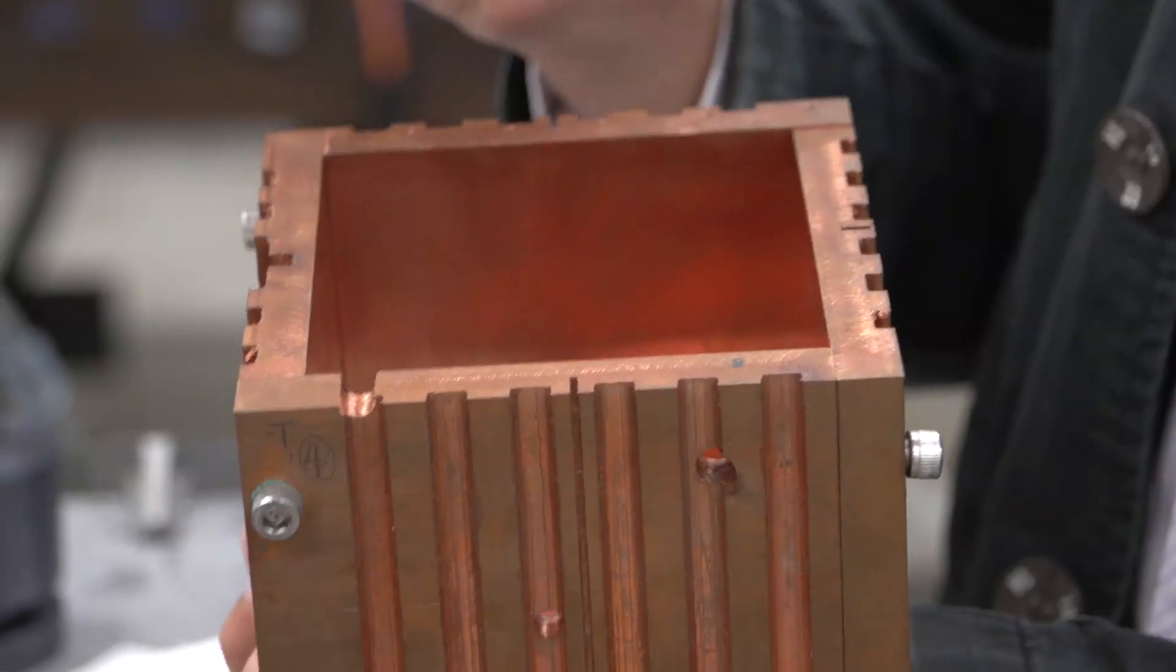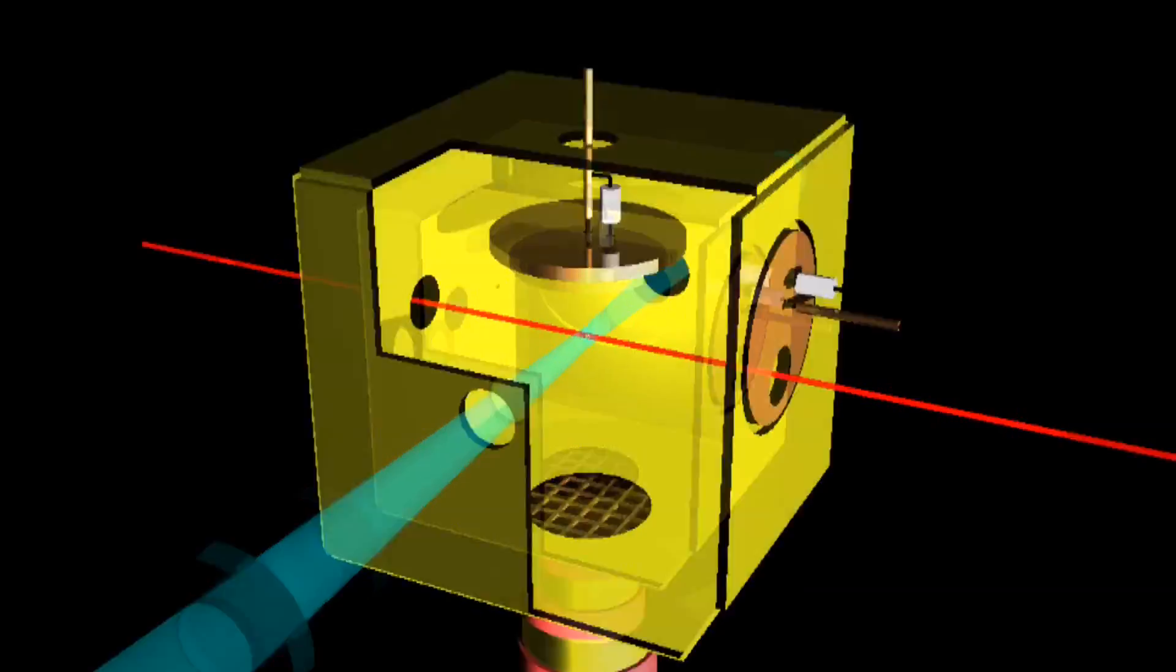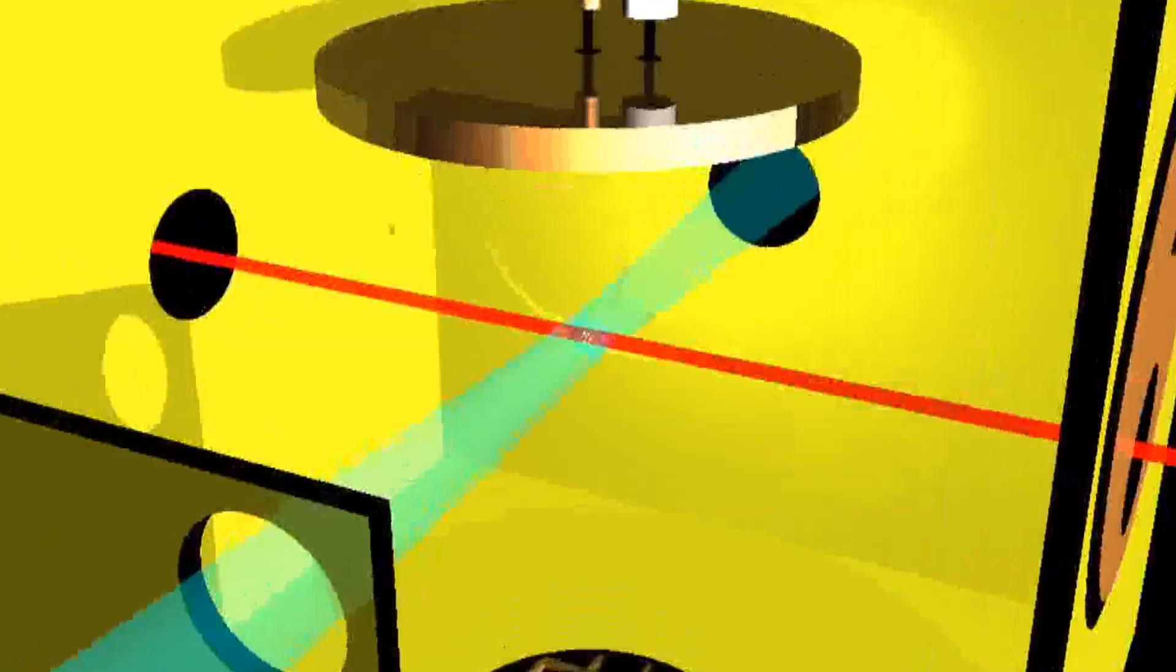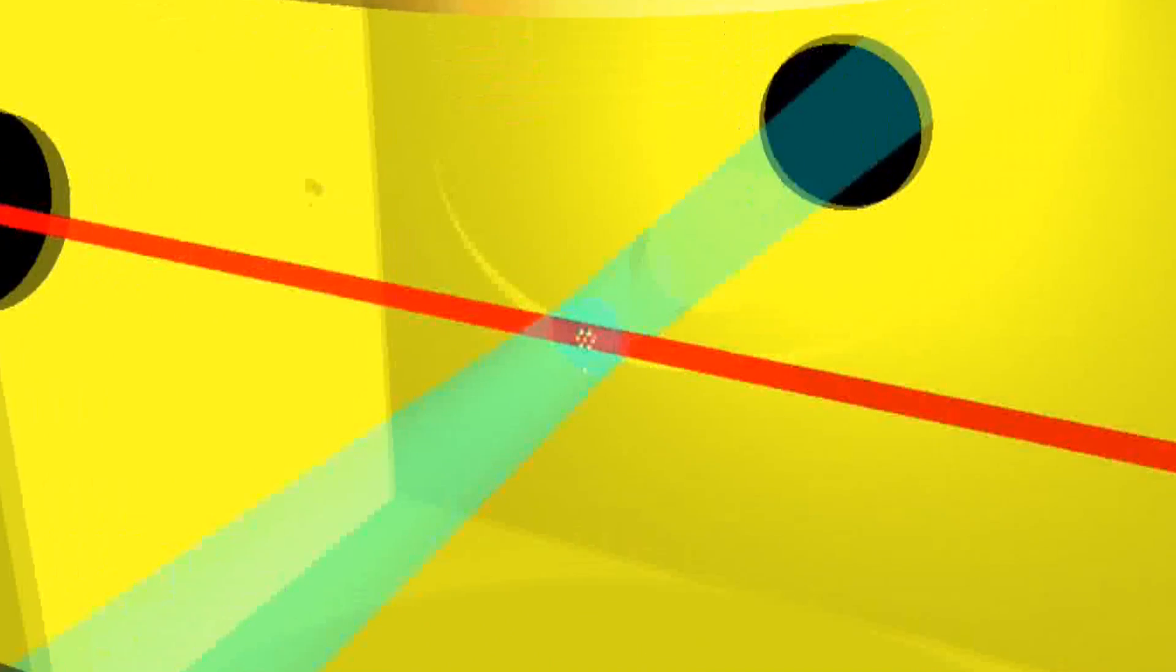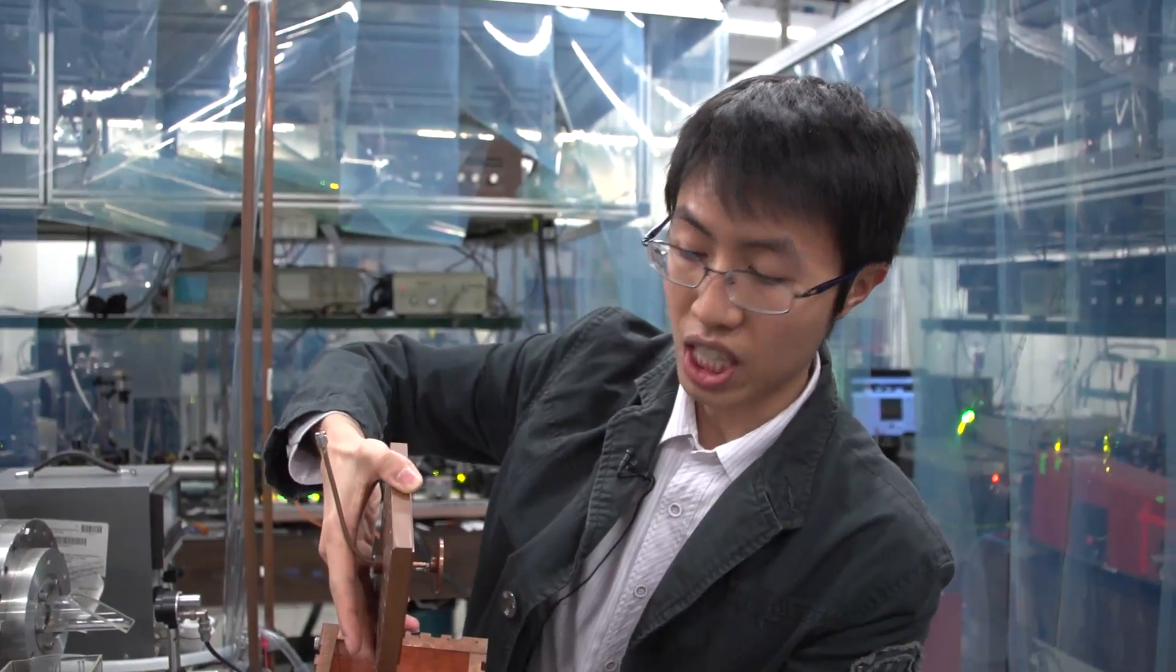This copper box is what is inside this chamber. So the atoms are actually in the center of this copper box. We have a laser beam going in this way, and the atomic beam going in this way, and they intercept each other in the center of here.